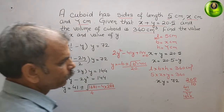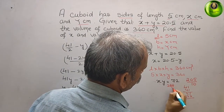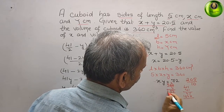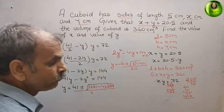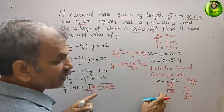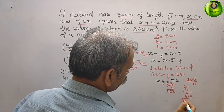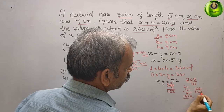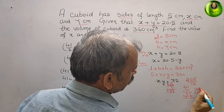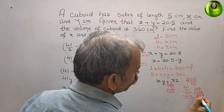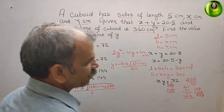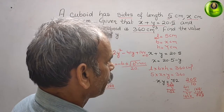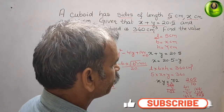Calculating 288 times 4 gives 1152. Then 1681 minus 1152 gives 529. So we have y equals 41 plus or minus root over 529, divided by 4.